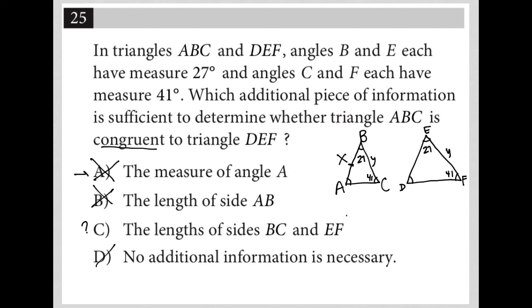So out of the options, choice C is the best answer. I wish it would have been written a little bit better and said that the lengths of sides BC and EF are congruent to each other. But either way, it's definitely better than A, definitely better than B, and definitely better than D. So C has to be the best answer for this question.